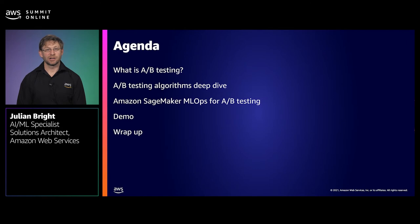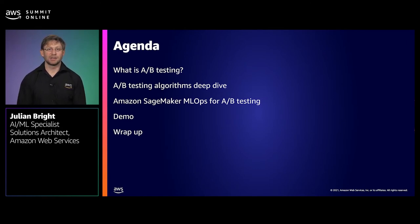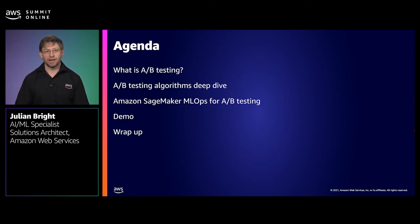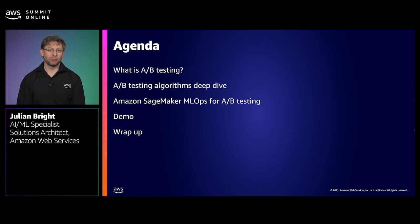Let's look at a quick agenda. Firstly, we will talk about what is A-B testing. Then we'll do a deep dive on A-B testing algorithms. We will explore how Amazon SageMaker can help us build an MLOps solution for A-B testing, followed by a demo before we wrap up.